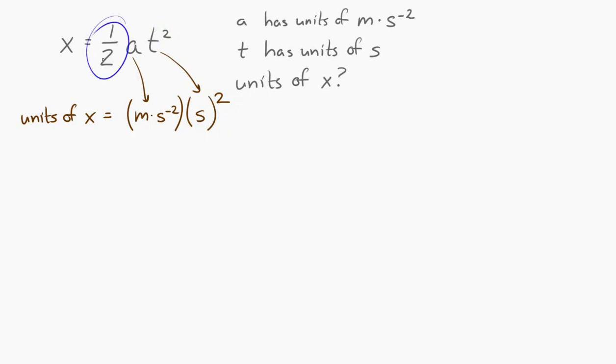So, t squared provides units of seconds squared. And then that one half sitting down in front, that one half doesn't provide anything. One half is just a number. It doesn't have a unit on it. So, it doesn't provide any units. So, x has units of meters per second squared times seconds squared. Seconds cancel out. So, x has units of meters.